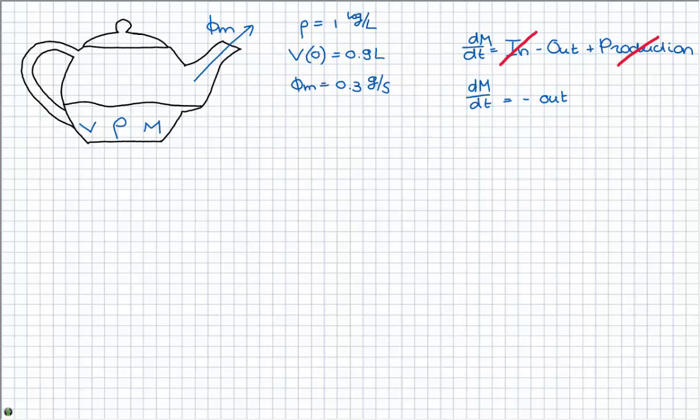So let's see how this looks like. The dm/dt is minus out of course, and we can define the outflow as Vm.